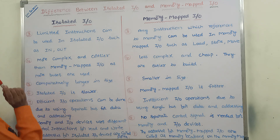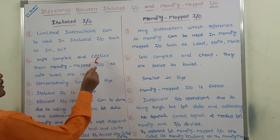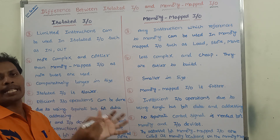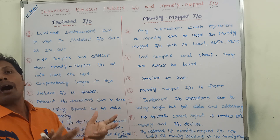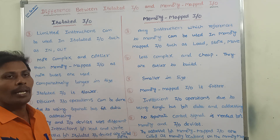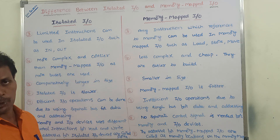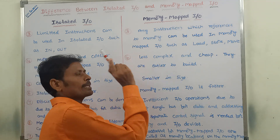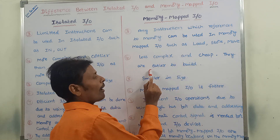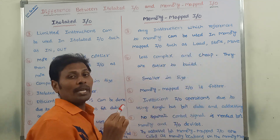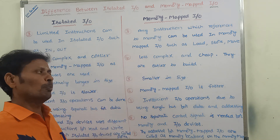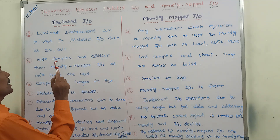The fourth point: isolated I/O is more complex and costlier than memory mapped I/O because more buses are used. Memory mapped I/O is less complex and cheaper — it is easier to build because fewer buses are required, making its cost lower compared to isolated I/O.